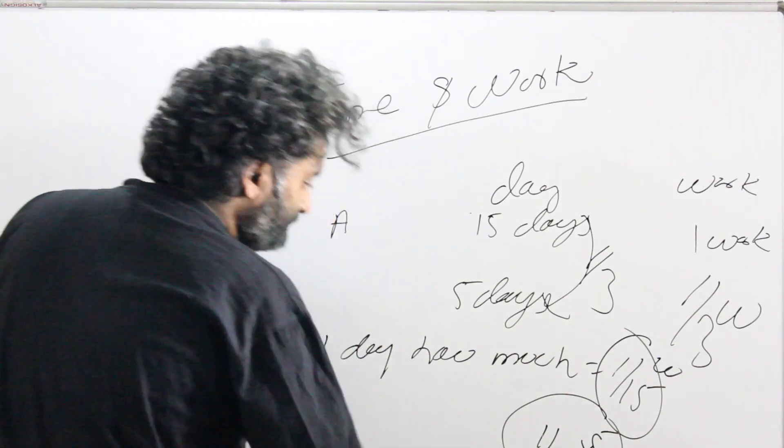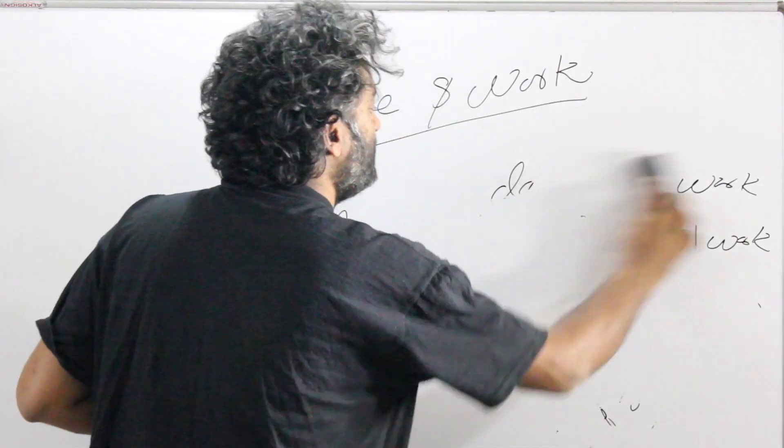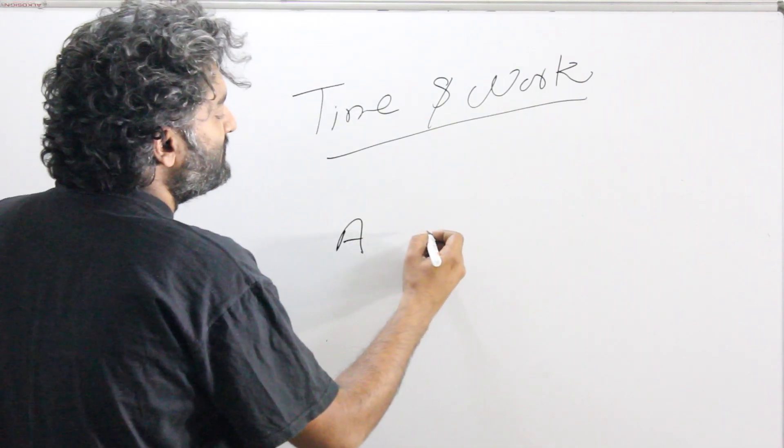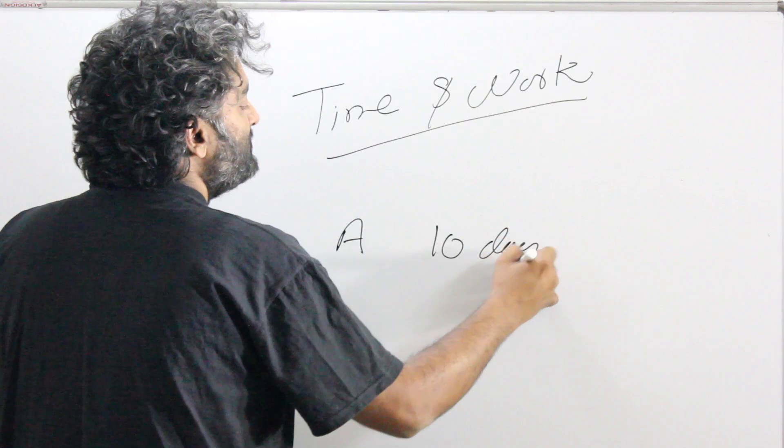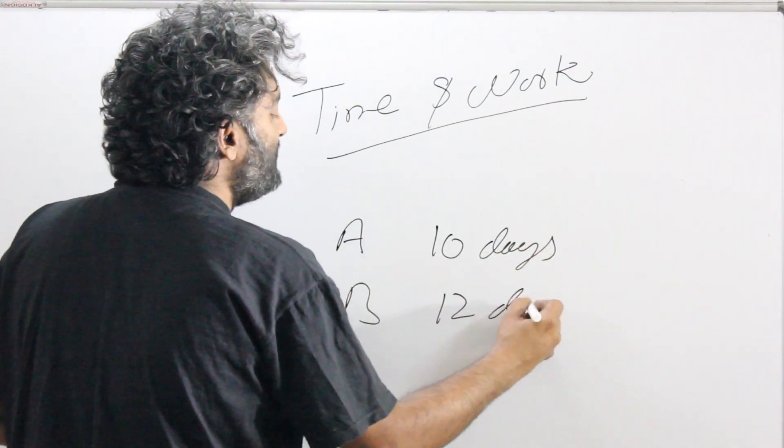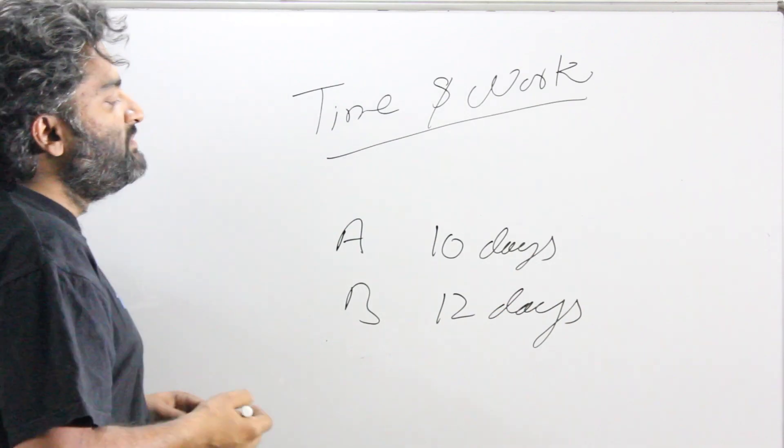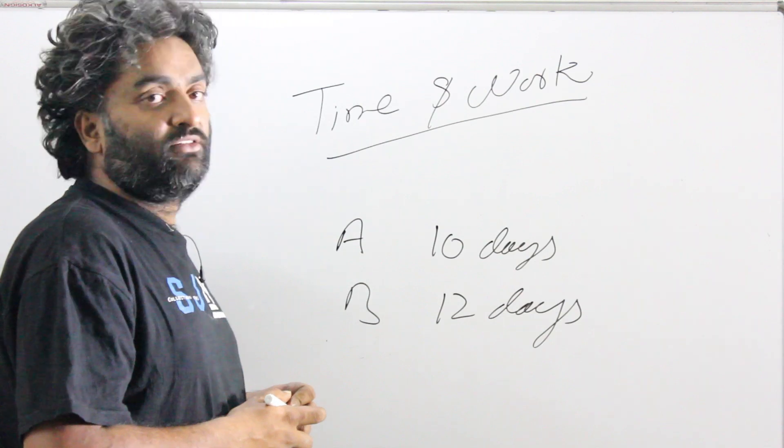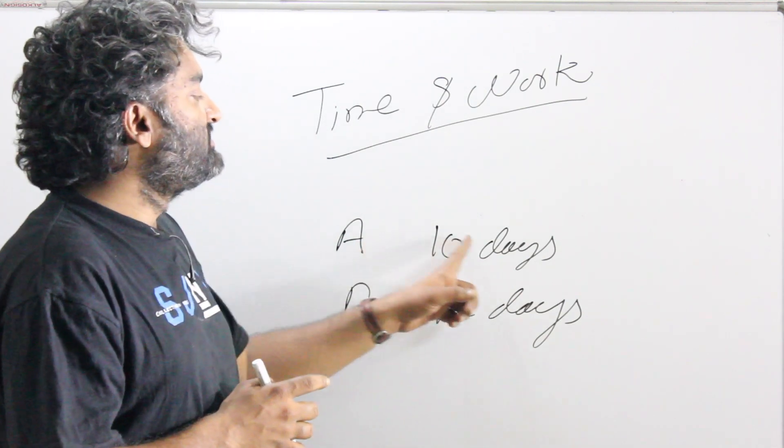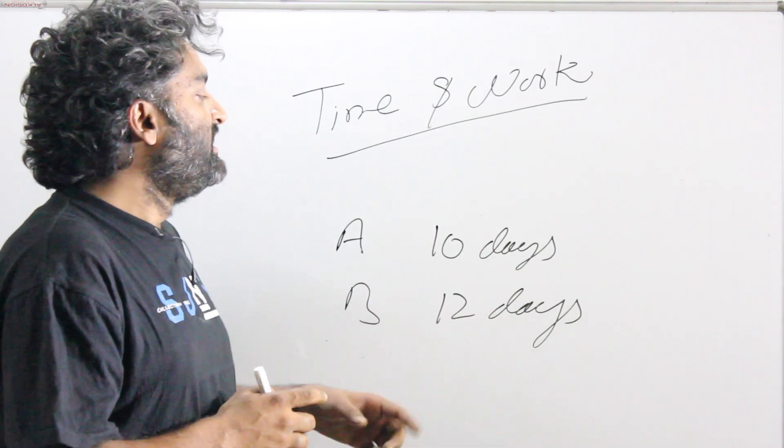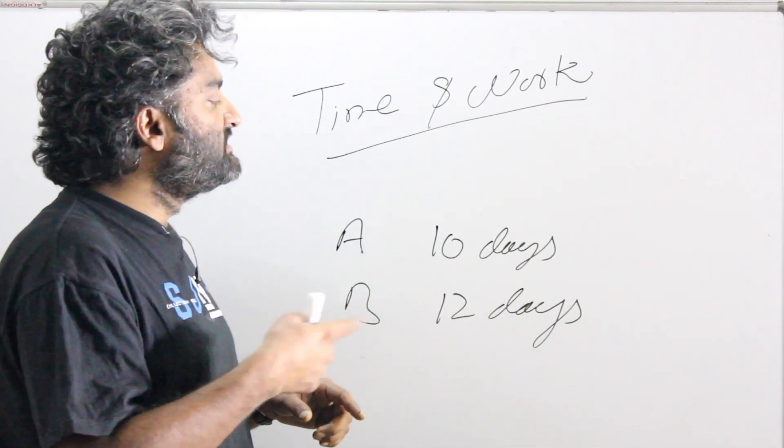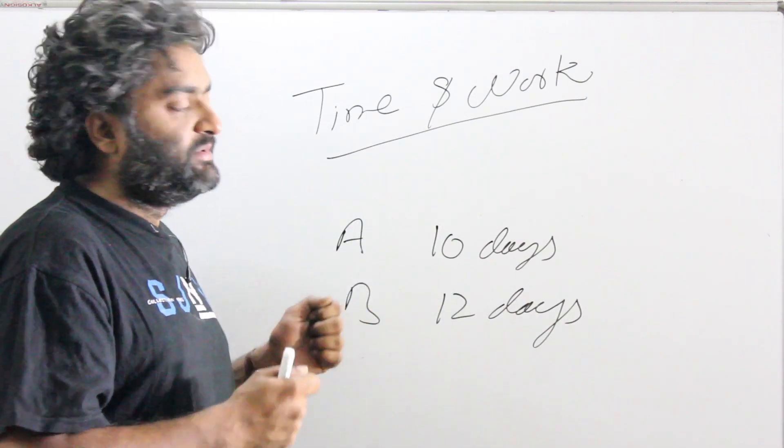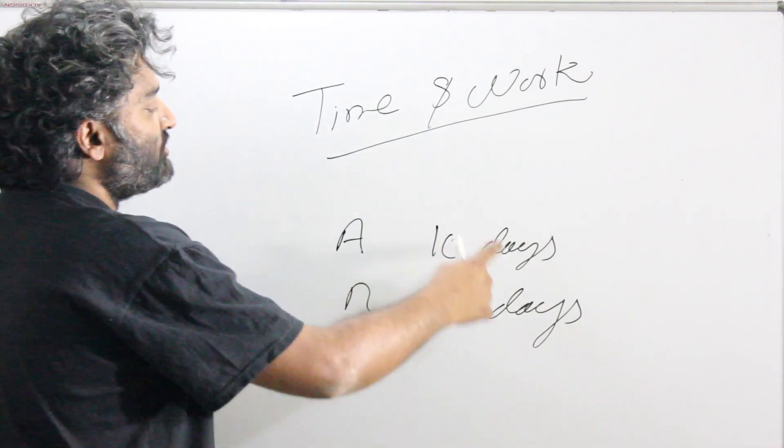Let's look at putting two people here. The story would go like, A can do a piece of work in 10 days, and B can do the same work in 12 days. If A and B work together, how long will it take to get the work done? This is our question statement. If they are working together, that means we're creating a third scenario where their rates were getting added.